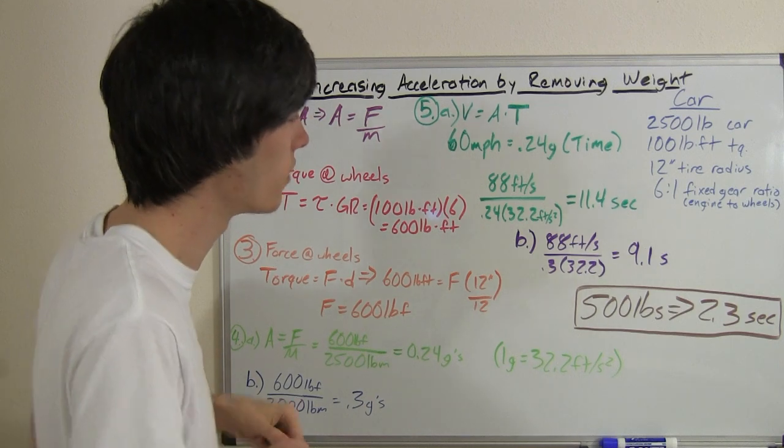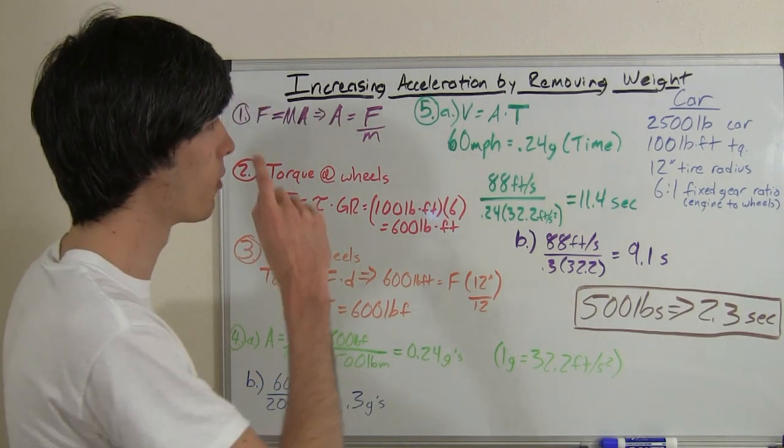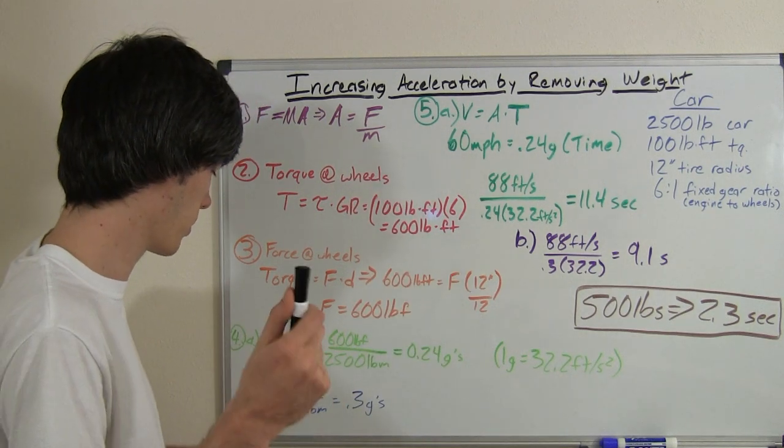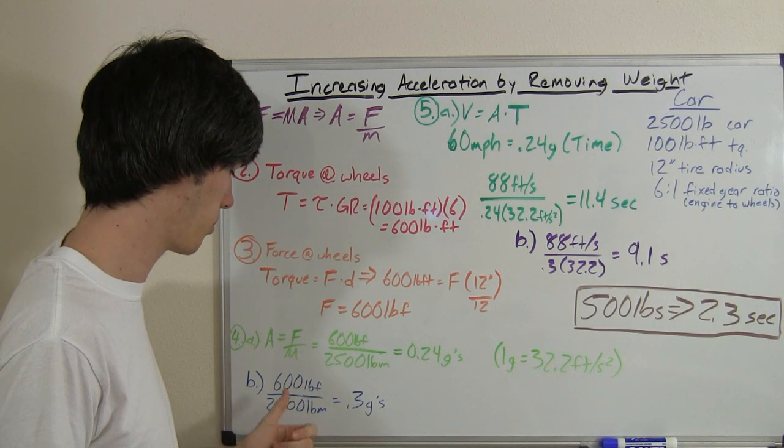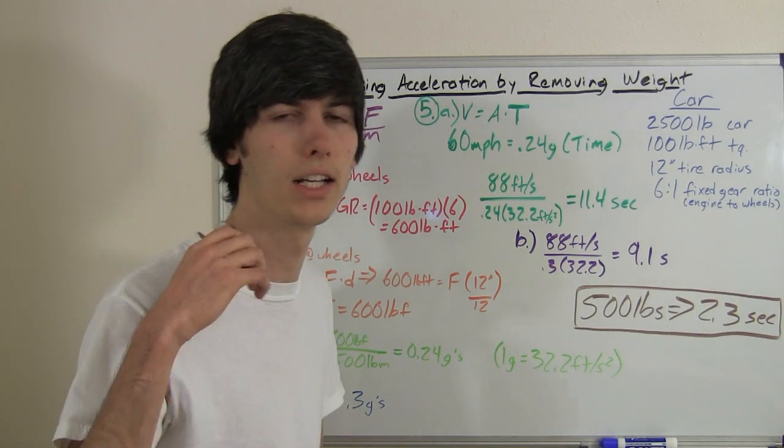Probably close to what my car does it in. It's a very fast machine. Now if we were to remove 500 pounds from this car, that would be a great thing, a challenging thing, but a great thing. So we've got 600 pounds of force divided by 2,000 pounds of mass. That gives us an acceleration of 0.3 g's.